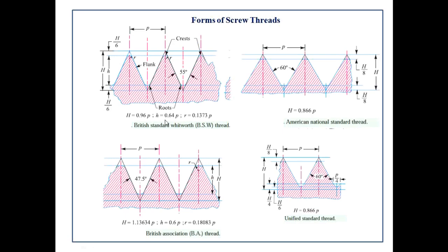The American National Standard thread is also called the US or Seller's thread. It has flat crest and root — no apex is present, it is flat. The flat crest can withstand more rough use than sharp V-threads. These threads are used for general purpose applications such as bolts, nuts, screws, and tapped holes.